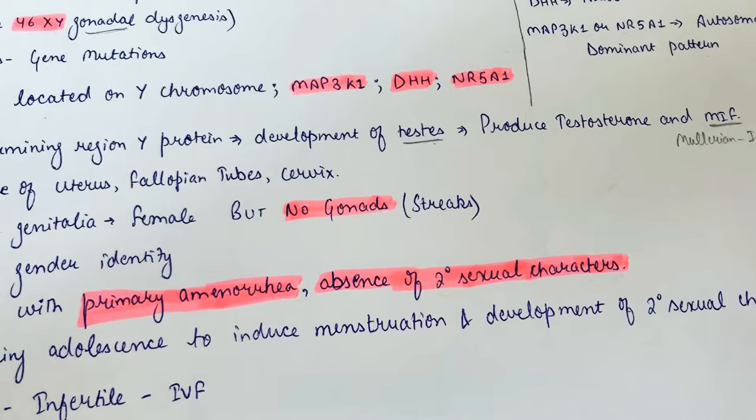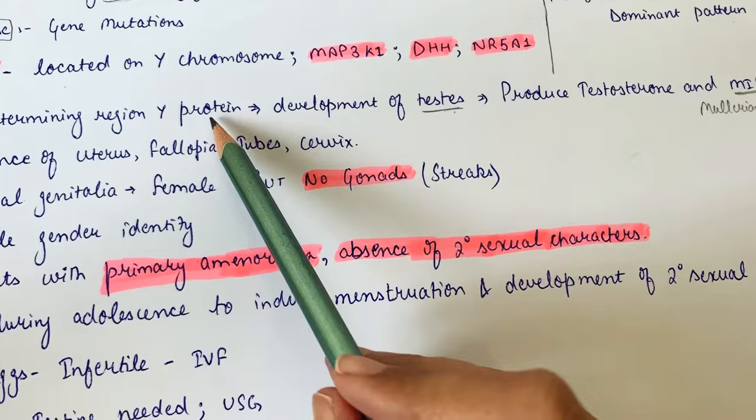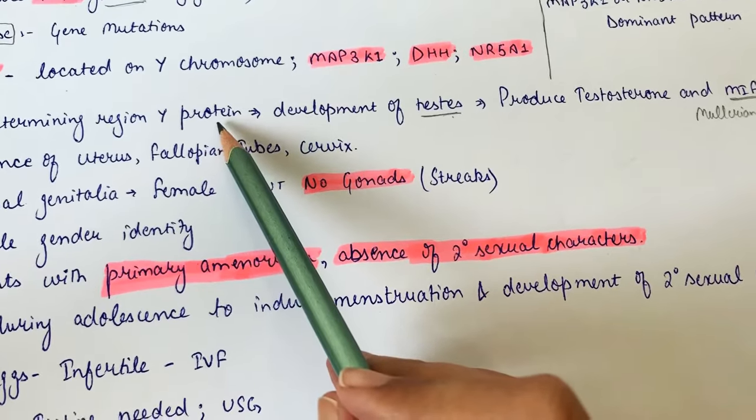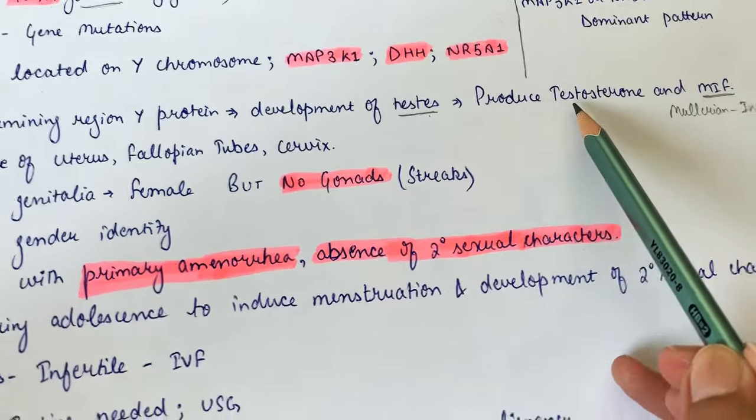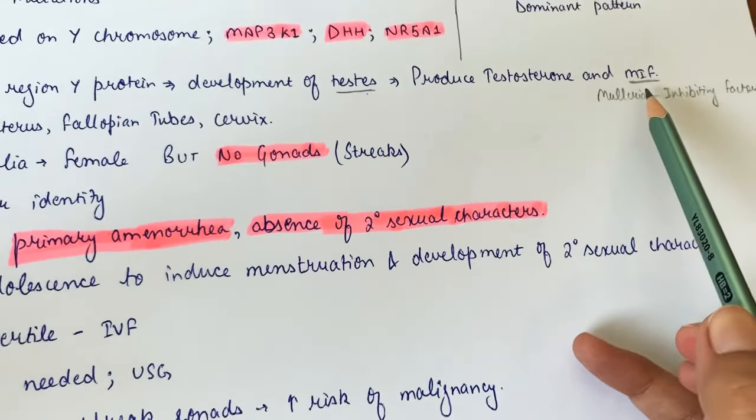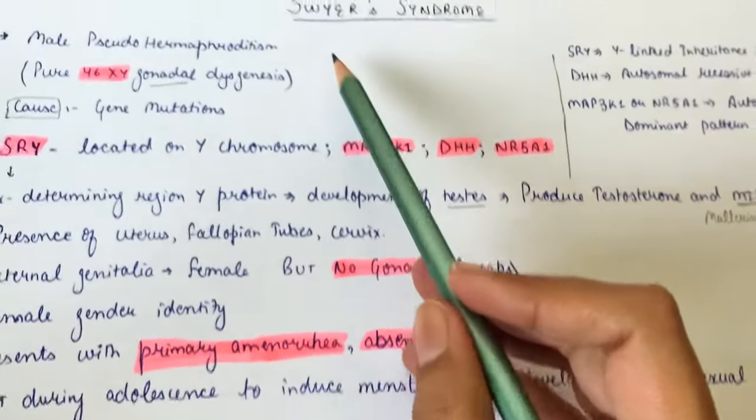But with a mutation in the SRY gene, this protein is not formed. There is no development of testes and no production of testosterone or MIF. So the fetus develops along female lines. Generally, this syndrome is not inheritable.